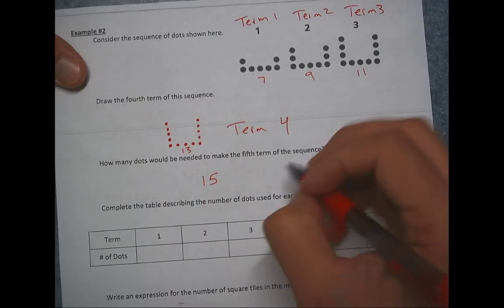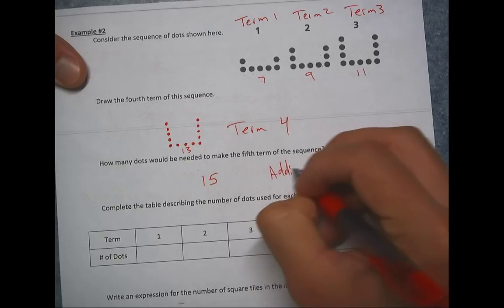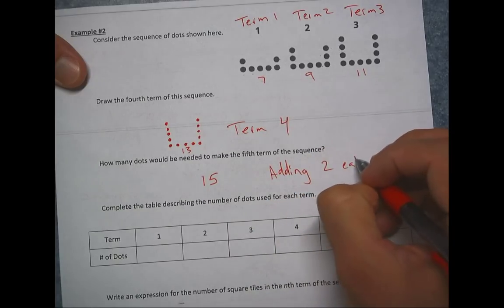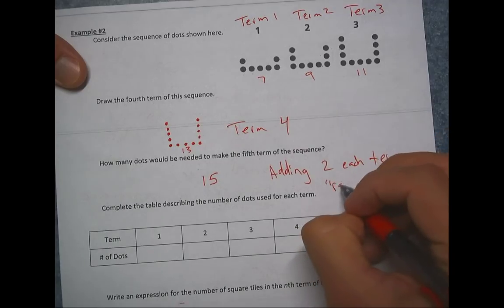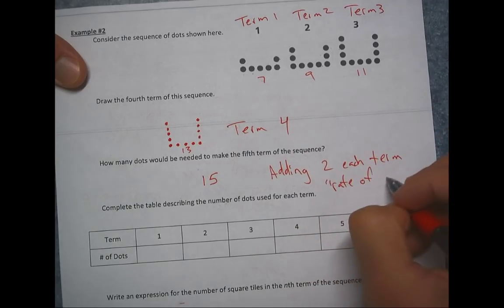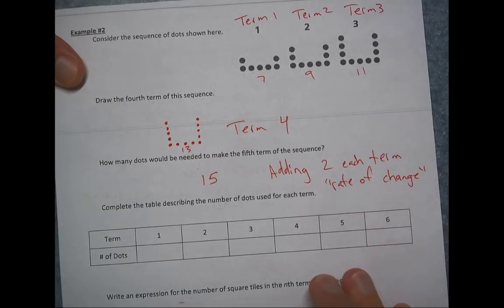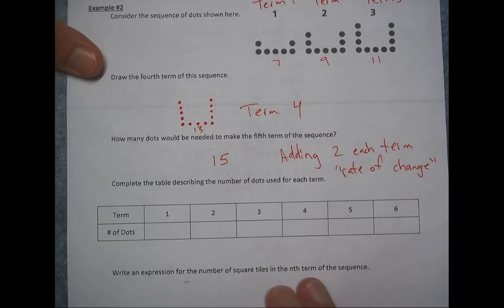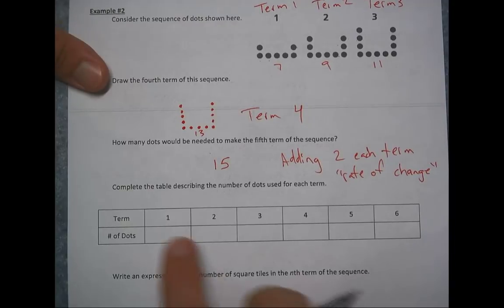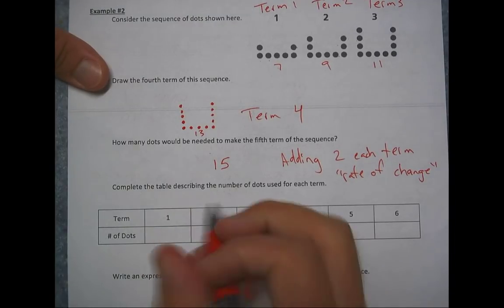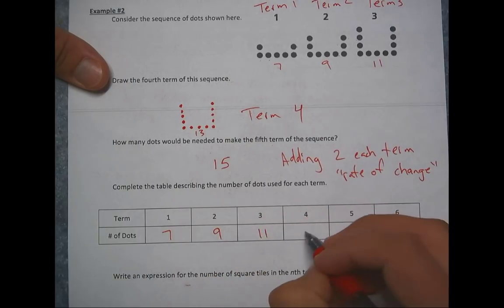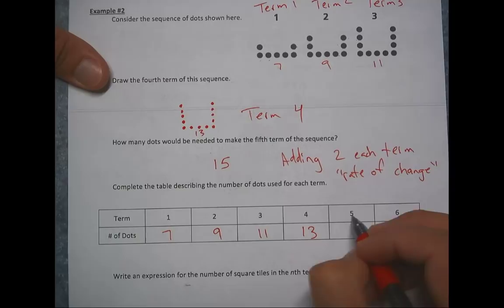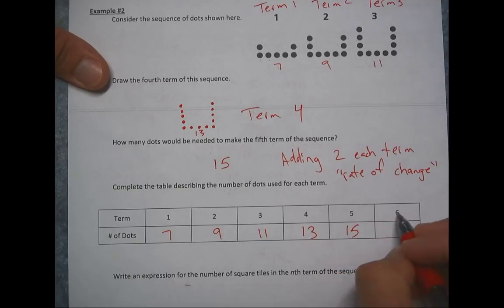So I'm adding two each term. And we're going to call that our rate of change. So the rate of change is two. It's increasing by two on every single term. So let's complete this table. Term one had seven. So term two had nine, 11, 13, 15. So term six would have 17 dots.